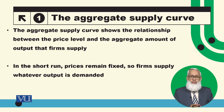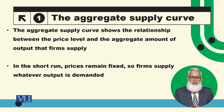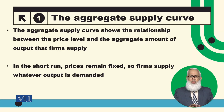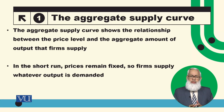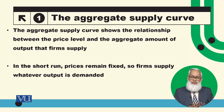یعنی short-run میں وہ جو بھی price fixed ہوگی اس پر جتنی بھی demand ہوگی وہ اس کو fulfill کریں گے۔ اور long-run میں وہ اپنے full employment level یعنی profit maximizing output level پر کام کرتی ہیں اور تمام prices اور wages adjust ہو جاتی ہیں، markets clear ہو جاتی ہیں، particularly labor market clear ہو جاتی ہے۔